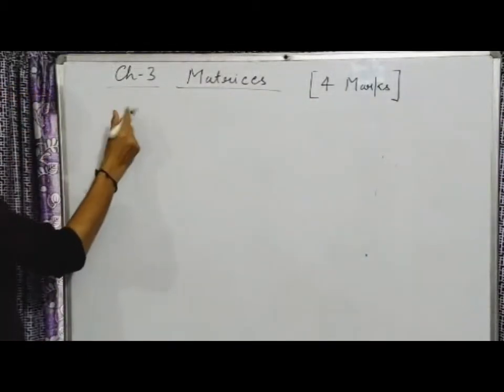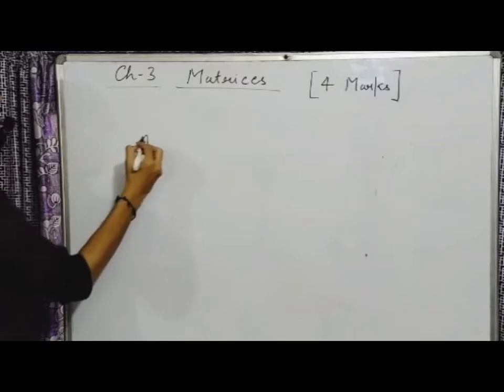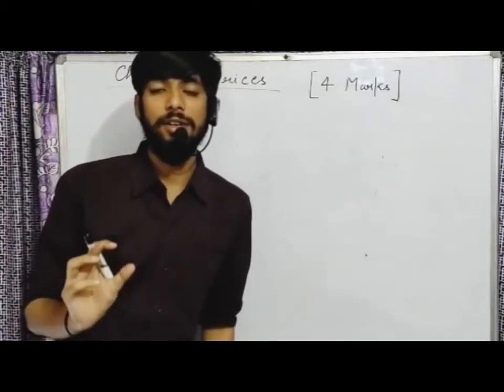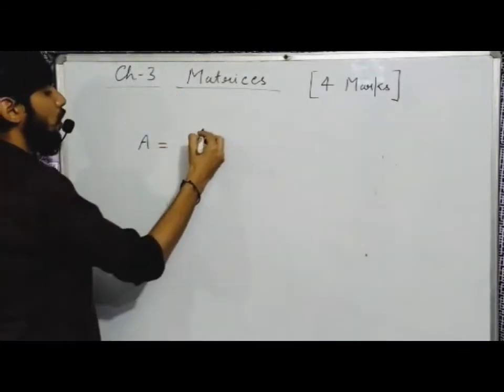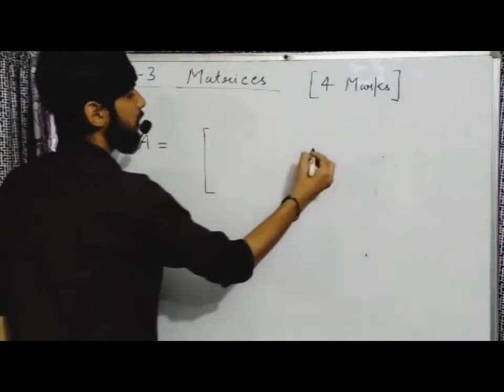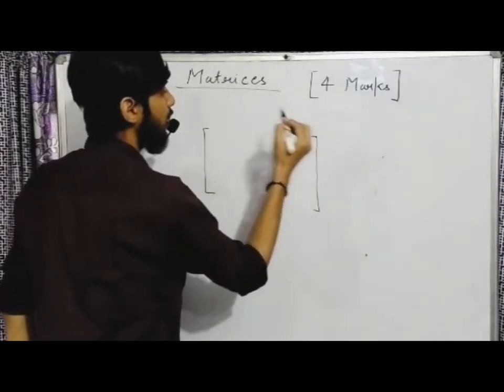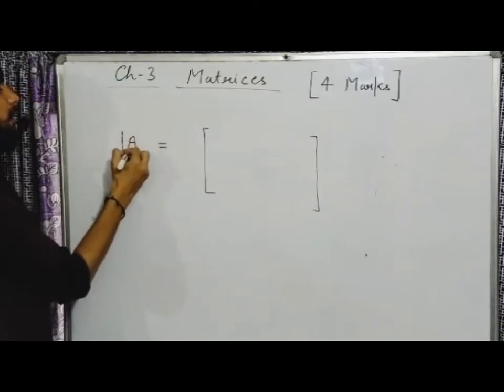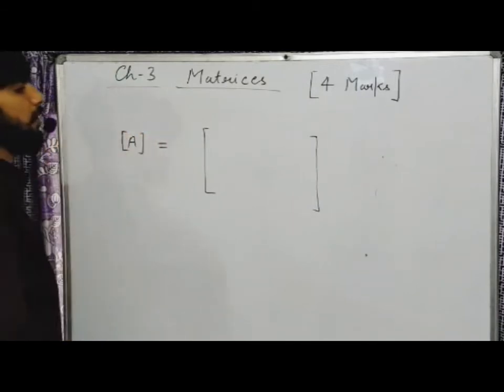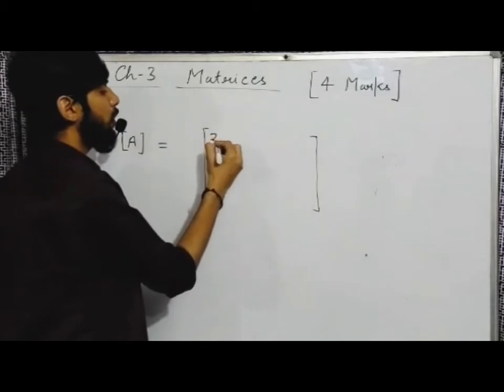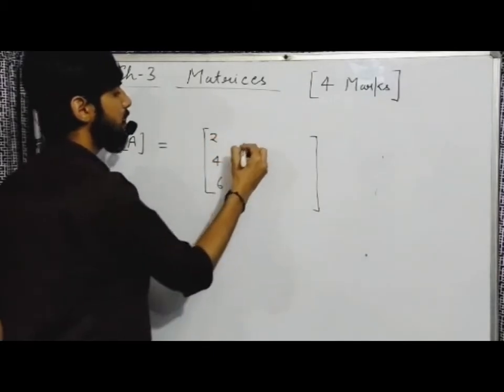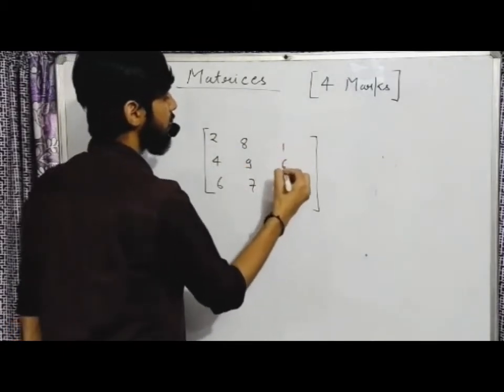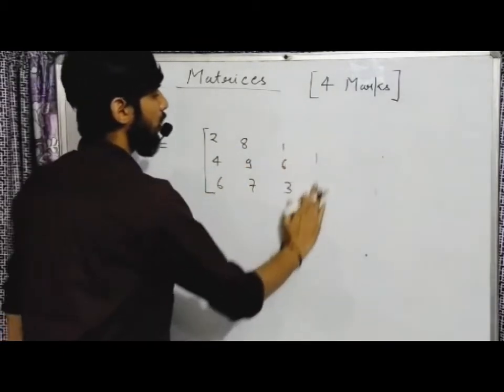Now, representation of matrix. Matrix ko capital letter se denote karte hain, jaise A, B, C, D - capital letters se denote karenge. And we write it in brackets. Ye koi matrix hai, aur iske upar kya lagayenge, bracket lagayenge. Now, elements likhte hain. For example: 2, 4, 6, 8, 9, 7, 1, 6, 3. Ye ho gaye aapke elements.